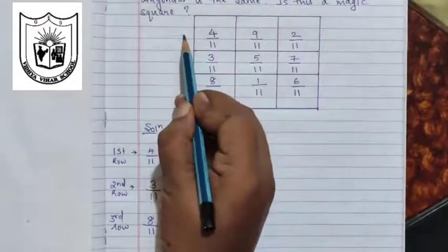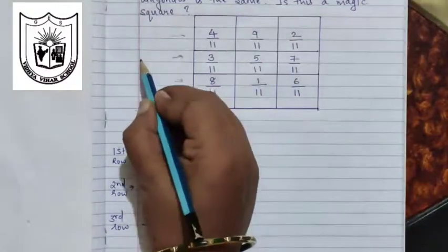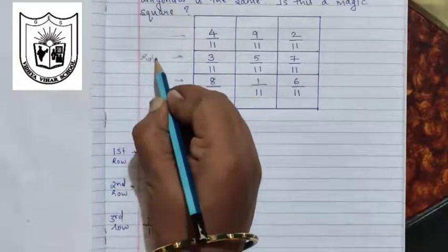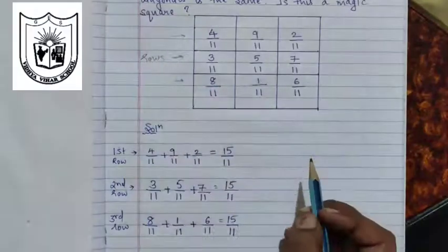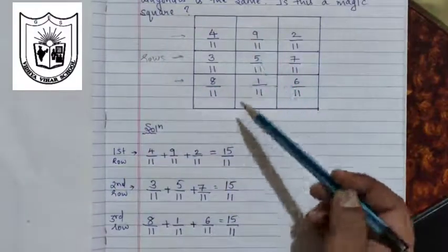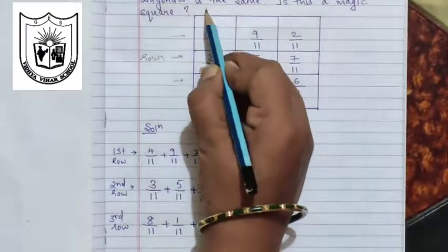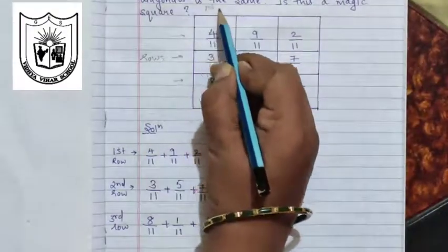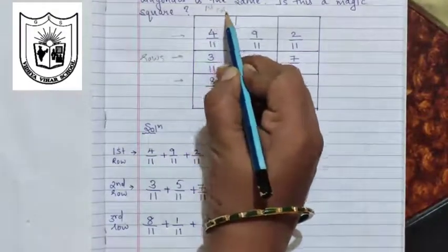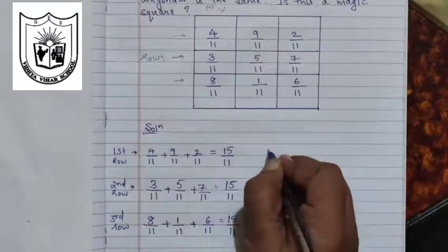So this is your first row, second row and third row — these are your rows. Now next we will add along the columns and check. So this is your first column, second column and third column.